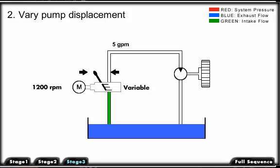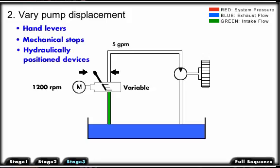Several means of varying the swashplate angle are used. They may include hand levers, mechanical stops, or more sophisticated hydraulically positioned devices.